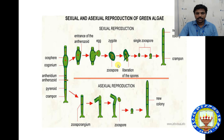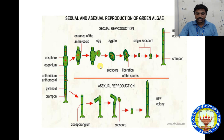Sexual reproduction in green algae involves antheridia and oogonium. A special type of sexual reproduction occurs in Oedogonium, where macronous and nanous forms are present. Antheridia and antherozoids appear, and the entrance of antherozoid into the egg forms a zygote, then a single zoospore. Zoospores are liberated into the water.